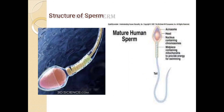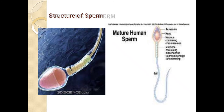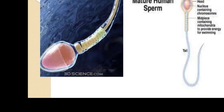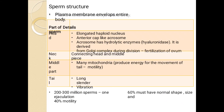Now the structure of sperm: sperm is divided into three main parts — head, middle piece, and tail. The plasma membrane envelopes the entire body. The head contains an elongated haploid nucleus. In the head, a cap-like structure is present which we call acrosome. Acrosome contains hydrolytic enzyme whose name is hyaluronidase. Hyaluronidase will break the wall of the egg or ovum at the time of fertilization.